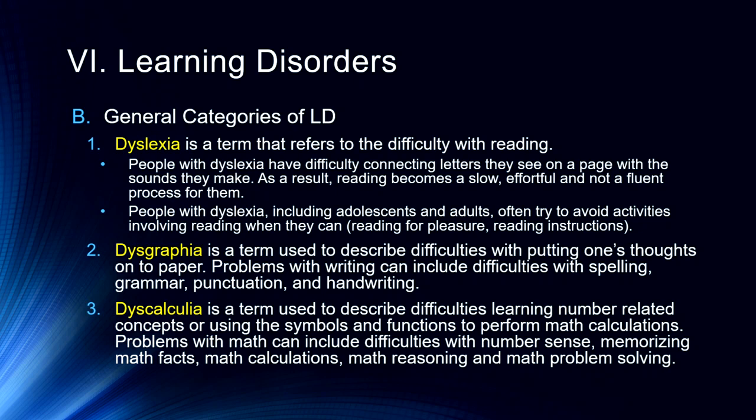Dyscalculia is a term to describe difficulties with number and symbol-based processing. Algebra, for example, is a symbol-based system. This includes number sense, memorizing math facts, math calculation, math reasoning, and math problem solving. Dyscalculia is different from people just not liking math or simply trying to avoid it — these are two different types of learning difficulties, and we must always be cautious about not ascribing a disorder to something else.